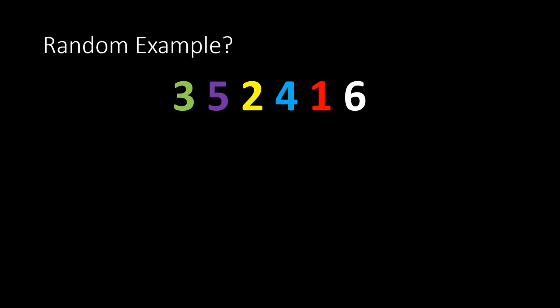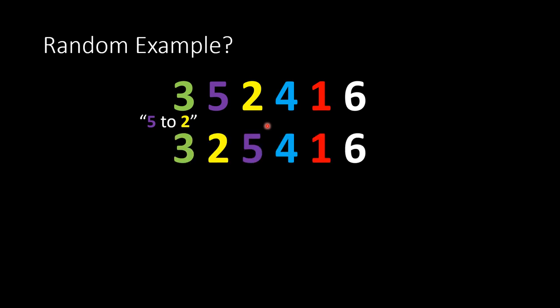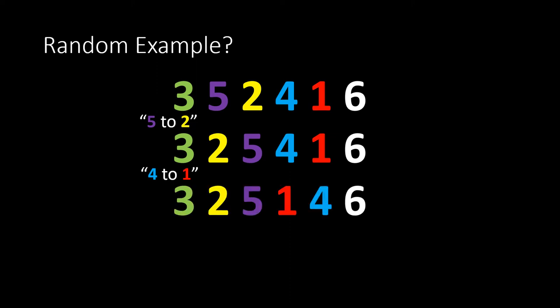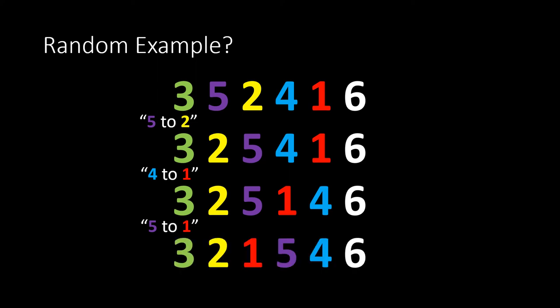Now let's have some random practice examples — this is now recorded so you can do this at home and check your answers. If the call is 'five to two', what's the next change? Think about who the two is now following, who the five is now following, and who the four is now following. The answer should be three, two, five, four, one, six. Another one: four to one — what's the next row? And finally: five to one, which is just the example from the last slide.